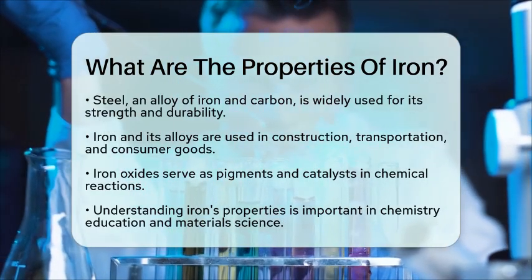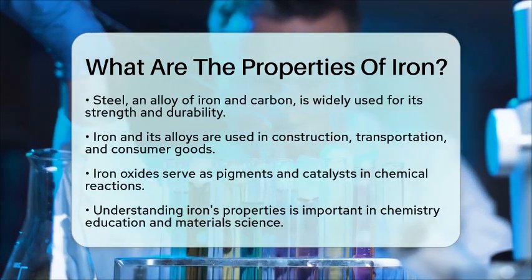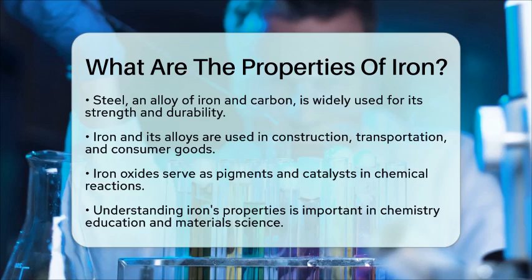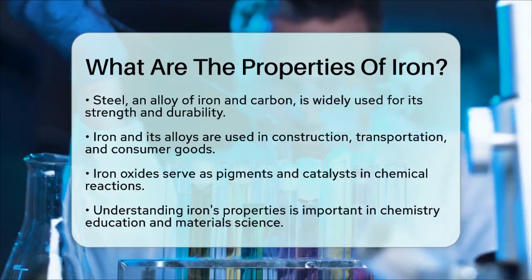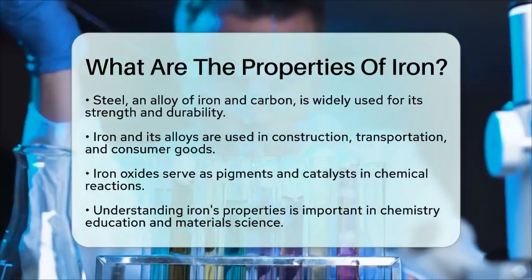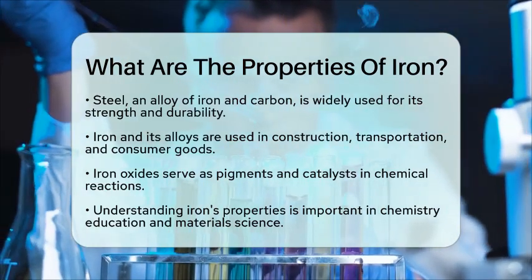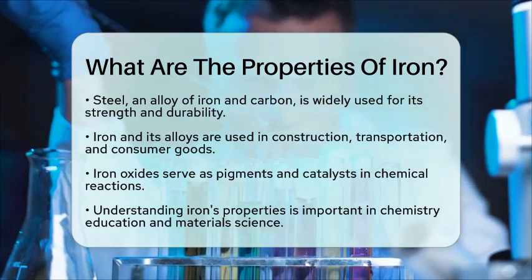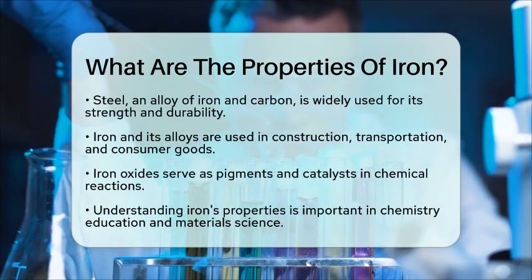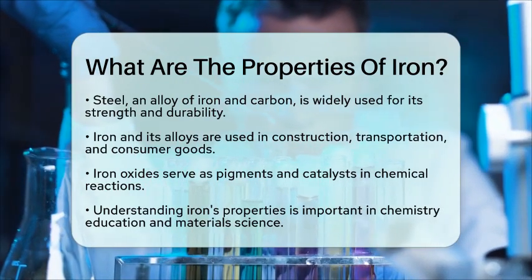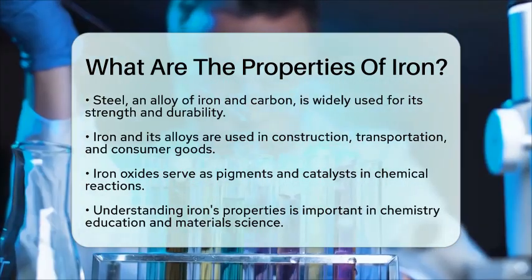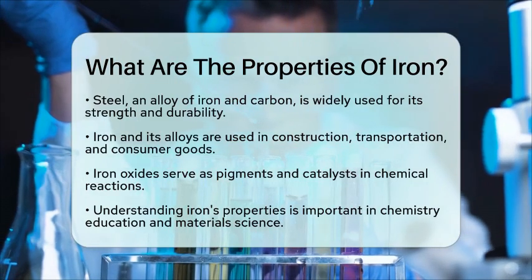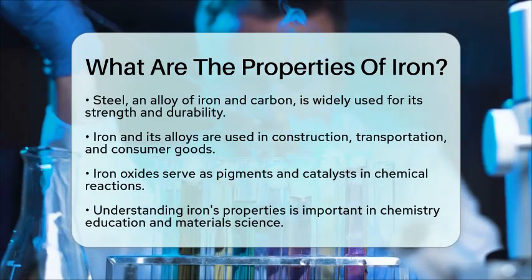You can find iron in vehicles, railways, cookware, and tools. The magnetic properties of iron are essential for electrical motors and generators. Additionally, iron oxides are used in pigments and as catalysts in chemical reactions.